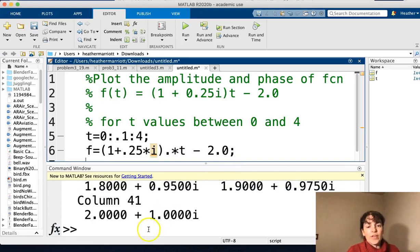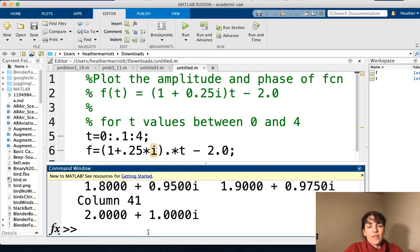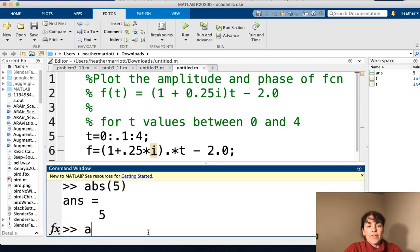One is abs. So that's the absolute value. The absolute value of a number, if it's just a real number, it's going to be getting rid of any negative sign. So the absolute value of 5 is just 5. The absolute value of negative 5, you're going to get positive 5.